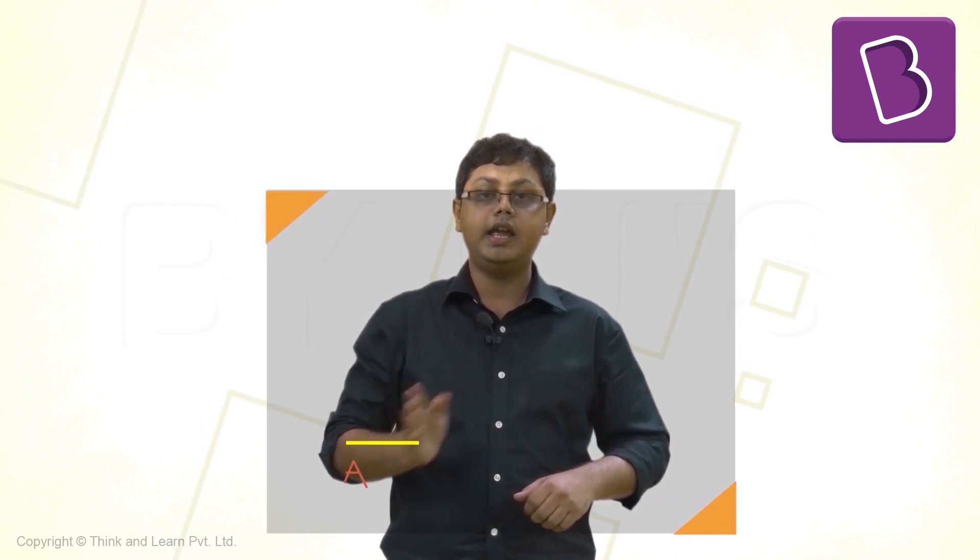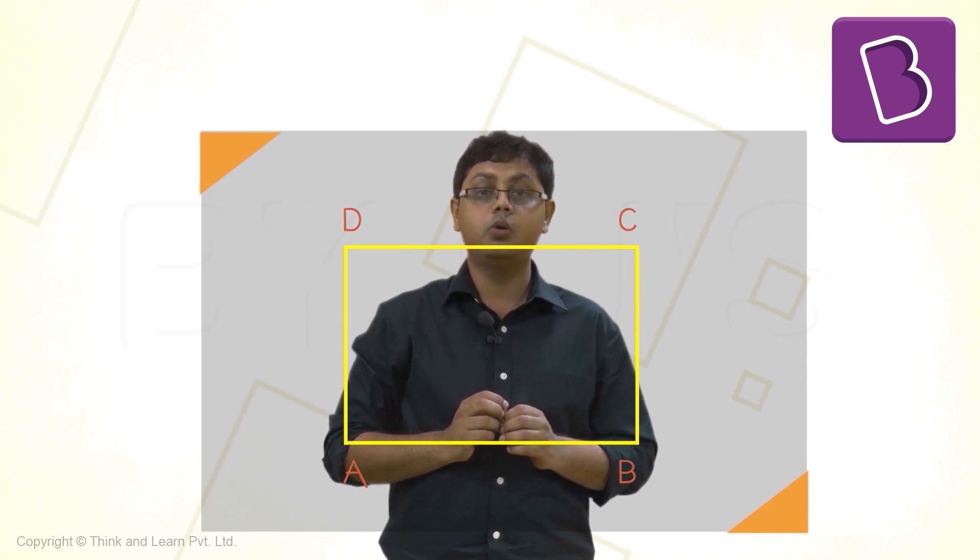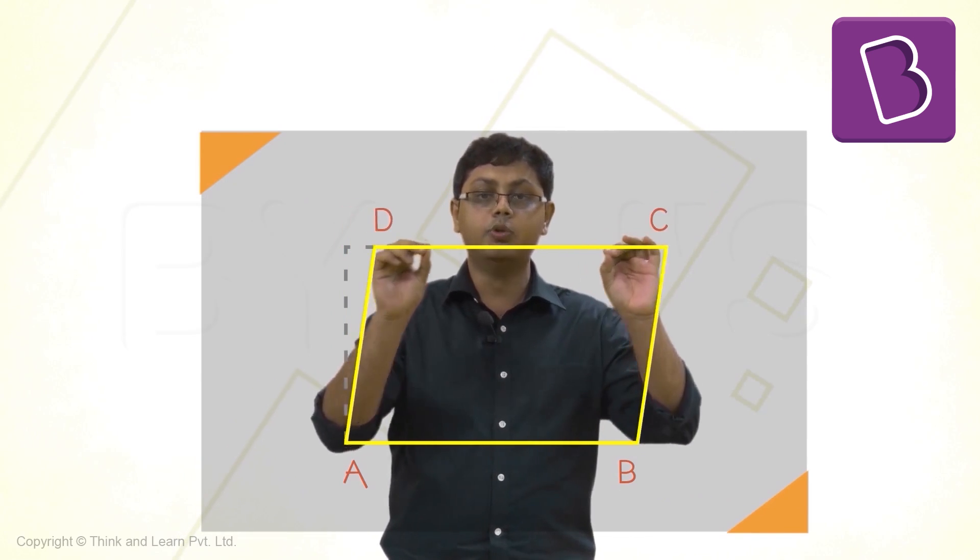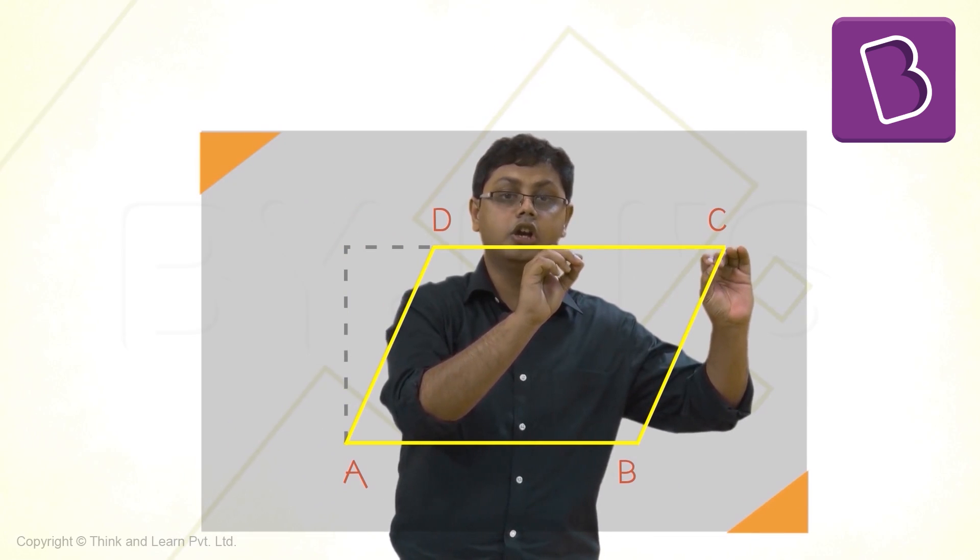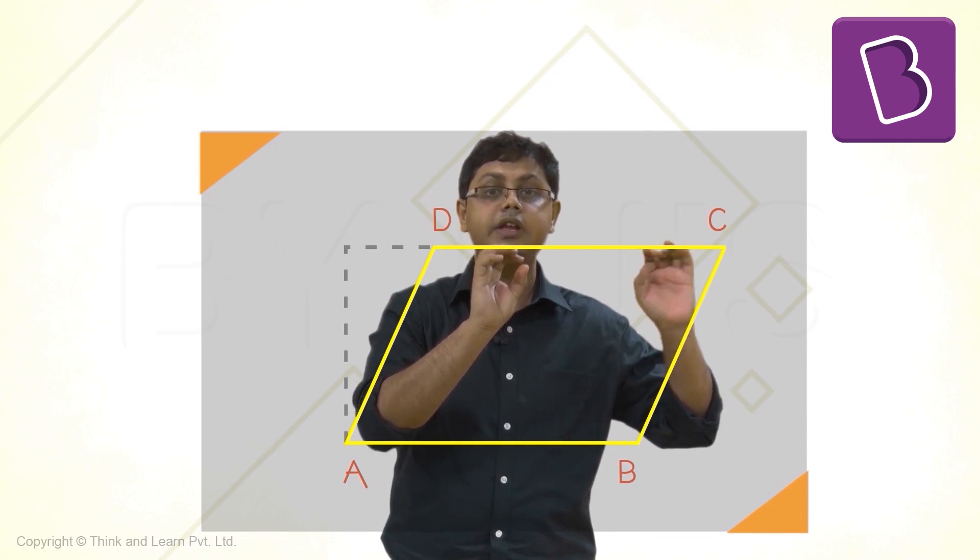But how did we get these parallelograms? For this, let's take a simple rectangle A, B, C, D. Now, I will hold the vertices C and D and move them along the line CD, holding the vertices A and B fixed.